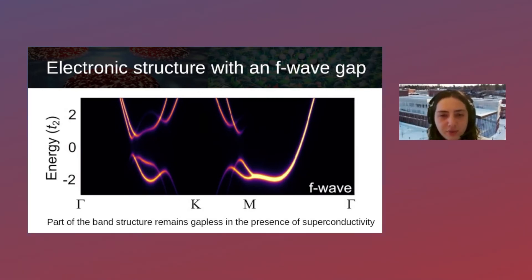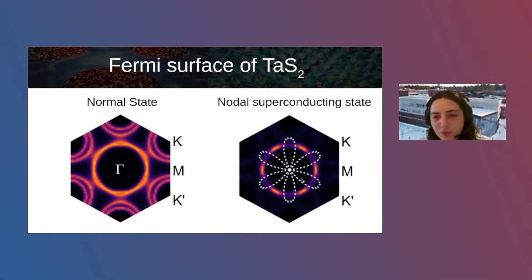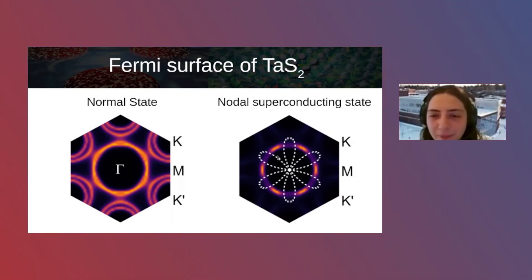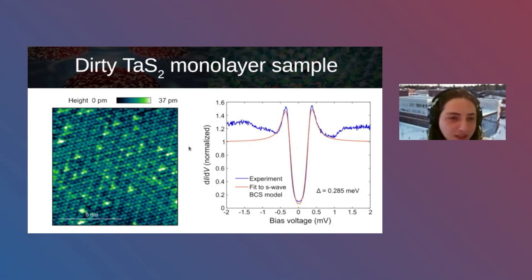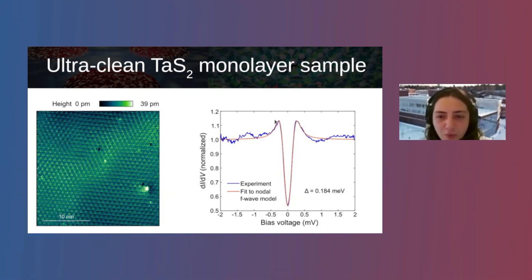From the electronic structure point of view, an s-wave superconductor has a fully gapped structure, whereas an f-wave superconductor has a gap in certain parts of the Brillouin zone and is gapless in others. In the nodal superconducting state, some parts of the Fermi surface remain gapless. In the dirty sample, the experiment shows a U-shaped density of states that fits very well with a conventional BCS formula for an s-wave superconductor; in the ultraclean limit, we get a V-shaped density of states fitting an f-wave nodal superconducting order.